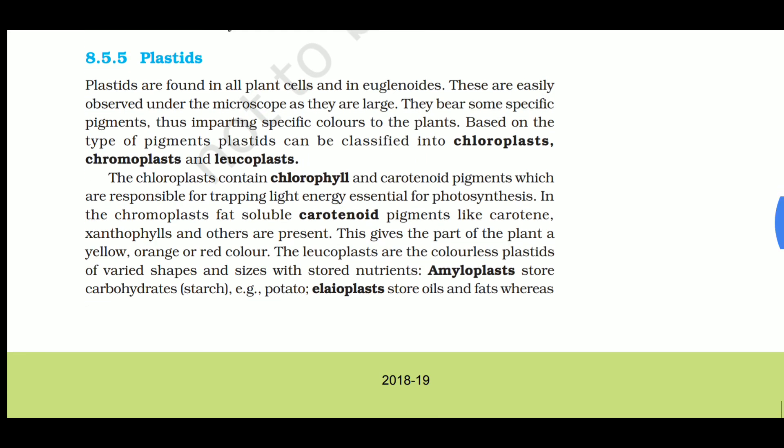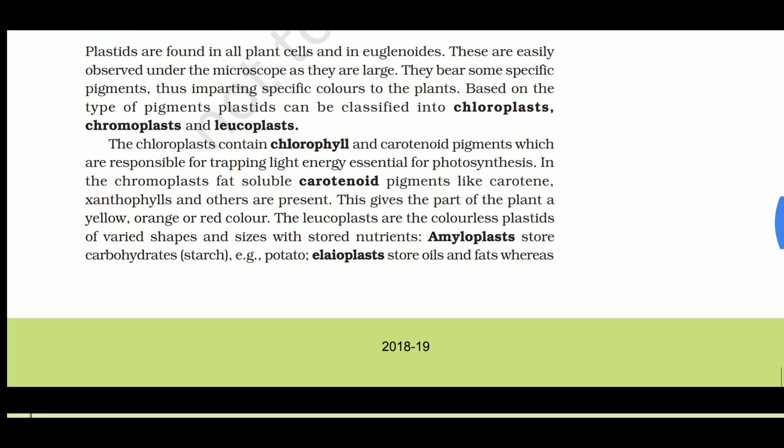Next: plastids. Plastids are found in all plant cells and in euglenoids. They are easily observed under the microscope as they are very large. Other than the nucleus, the largest cell organelle is the nucleus itself - next to it in size are plastids. They bear specific pigments, imparting specific colors to plants.